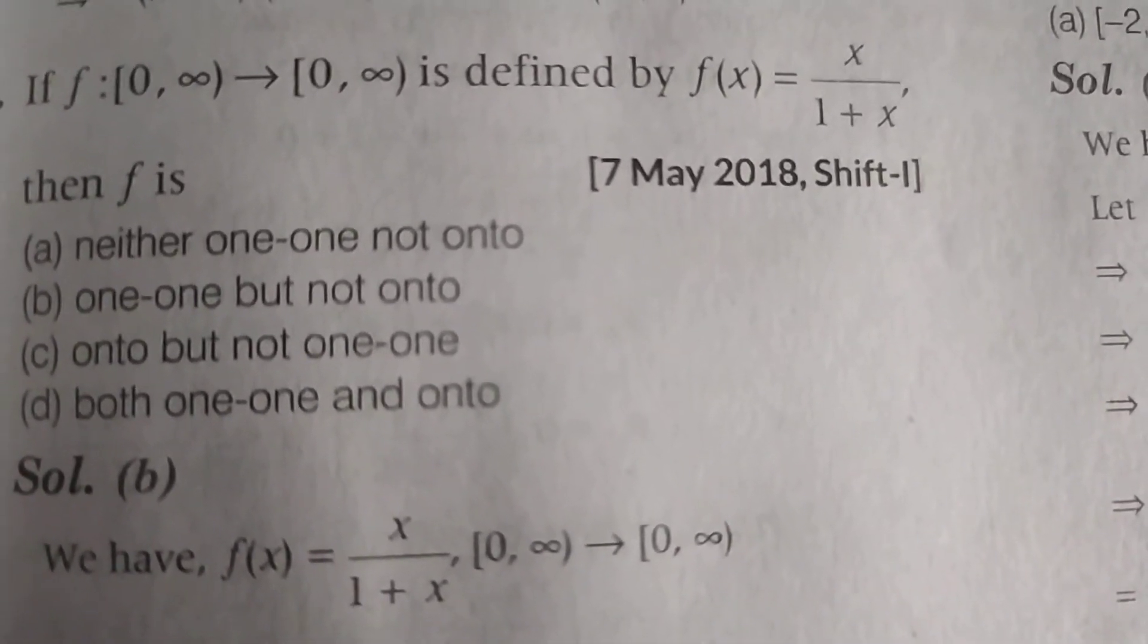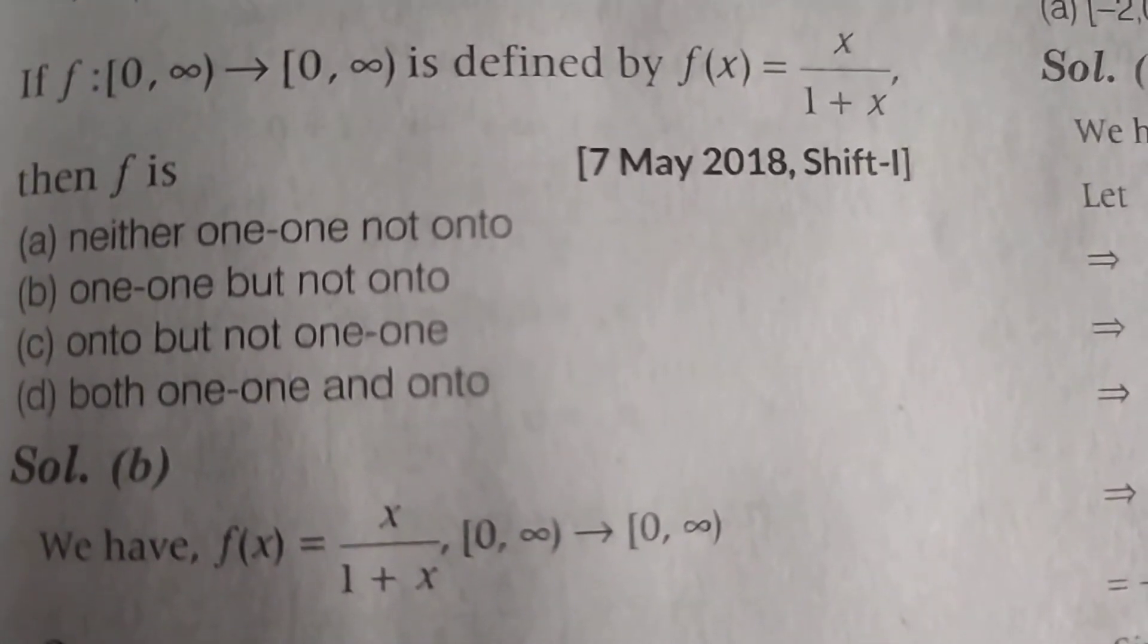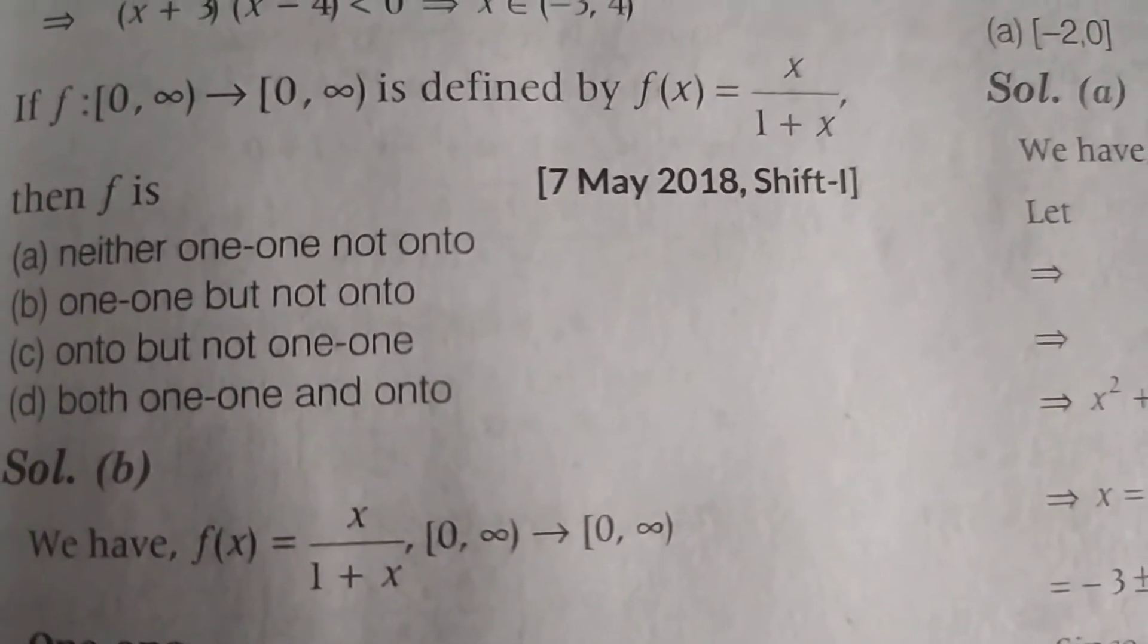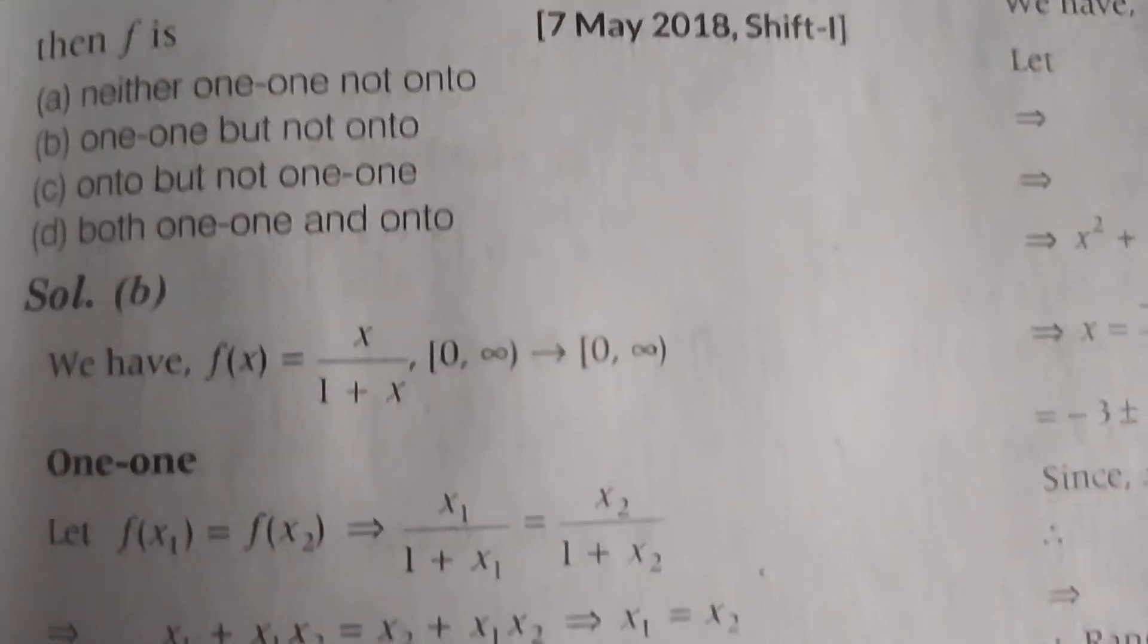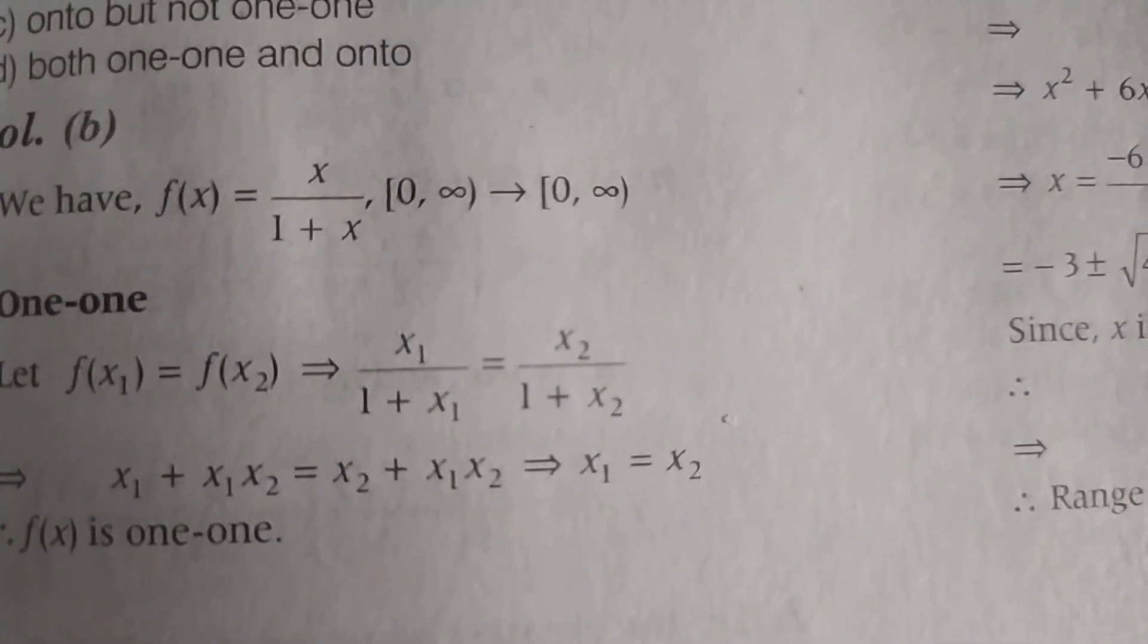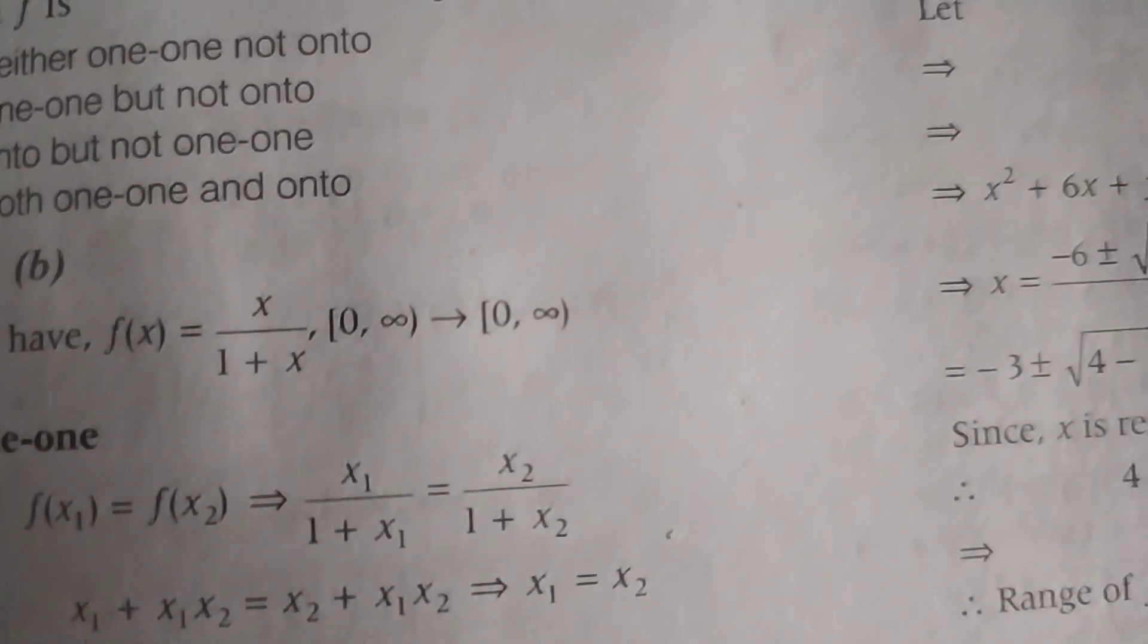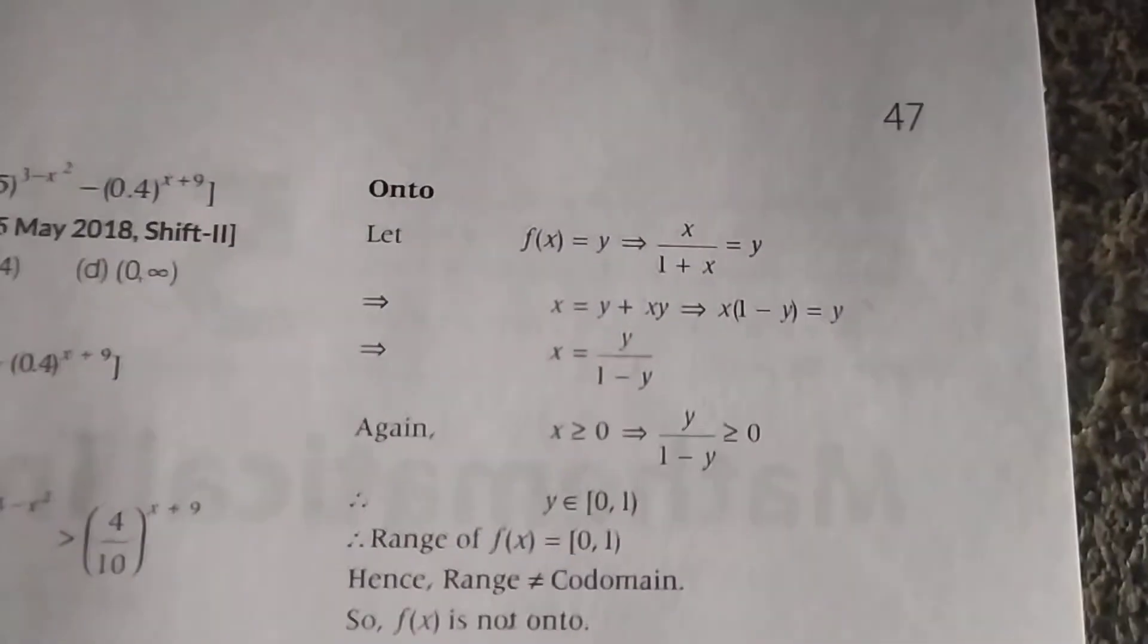The remaining questions are about one-one and onto. Concentrate on the definitions. For one-one function, take the condition f(x₁) = f(x₂), and check how this works. This shows f(x) is one-one.